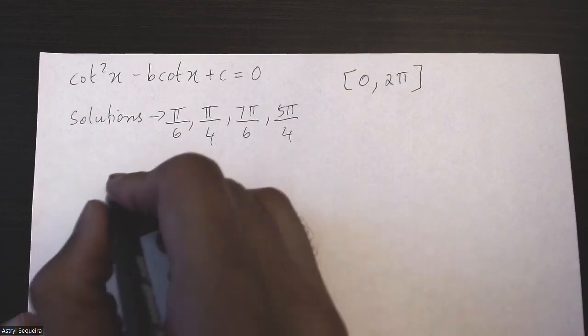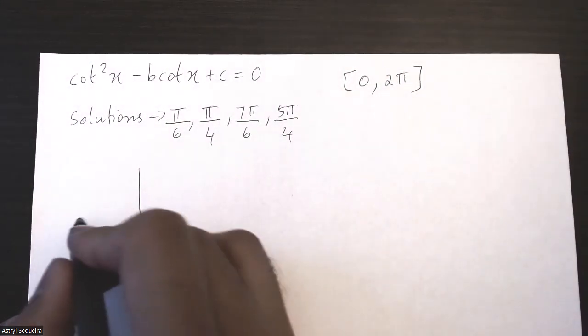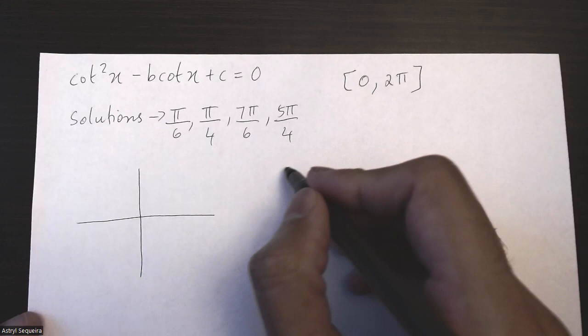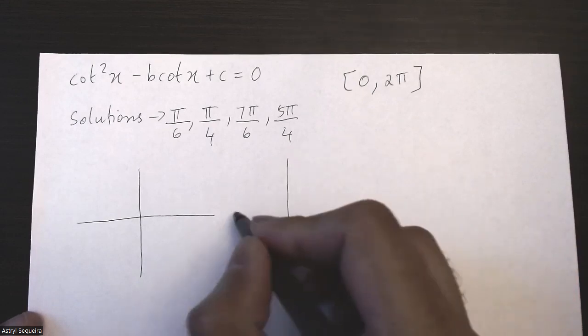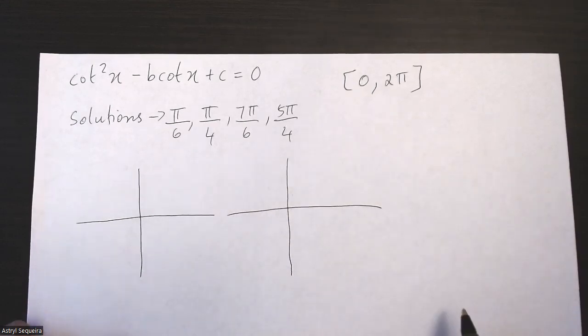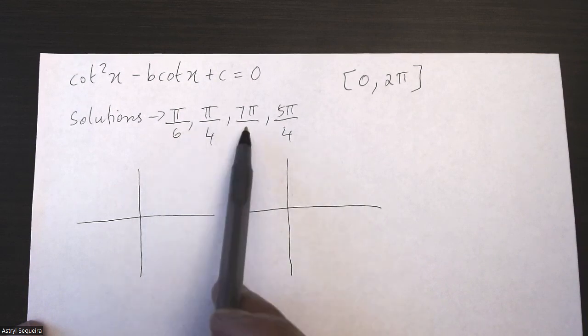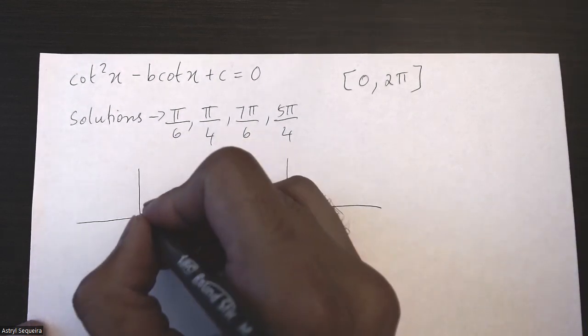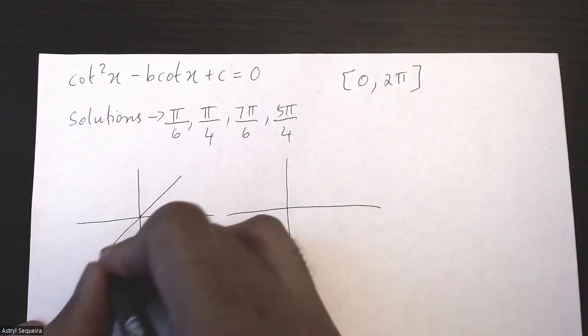So the first thing I'm going to do is just draw out my solutions. Since it's quadratic, I'm going to have two sets of solutions. The first set is going to be π/6 and 7π/6 because those both involve the acute angle of π/6.